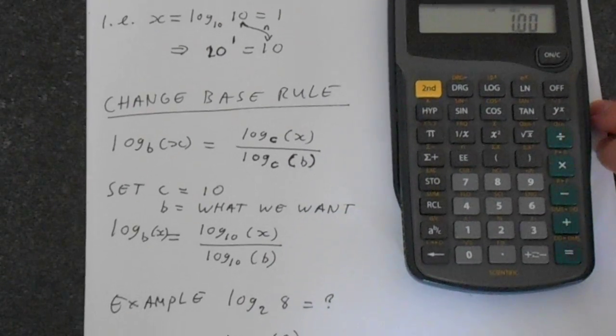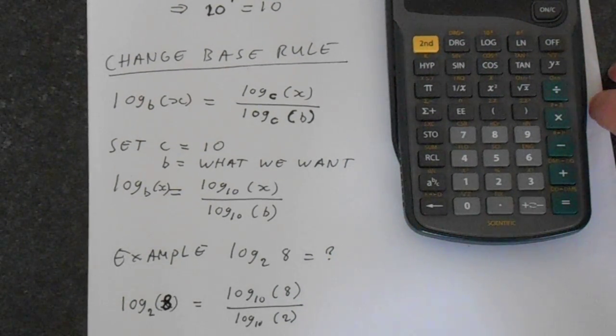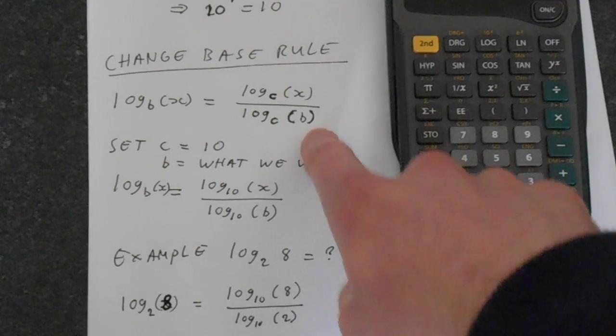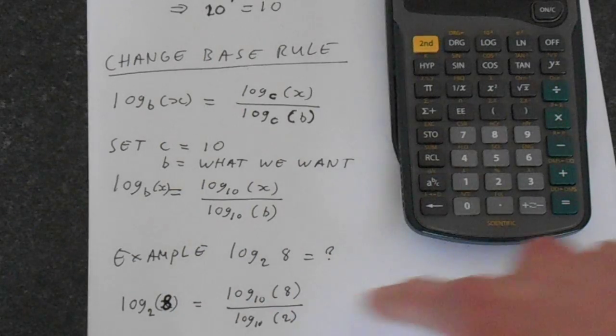Okay, let's show you how to do this on the calculator. So what we're doing is log 10 of 8 divided by log 10 of 2, substituting for the b, substituting for the x. You see this is b here and x in here.